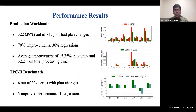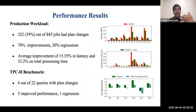We conducted performance experiments over production workload as well as the TPC-DS benchmark. For the production workload, we found that about 39% of jobs had plan changes. Among those with plan changes, we selected a subset of jobs with substantial changes for execution. Among those executed, 70% had performance improvements while 30% had regressions. We found similar results on the TPC-DS benchmark: out of 22 jobs, there were six plan changes, five of which had improvement in latency as well as total processing time.